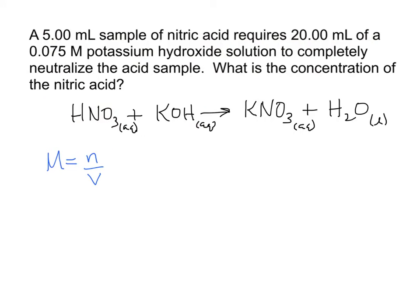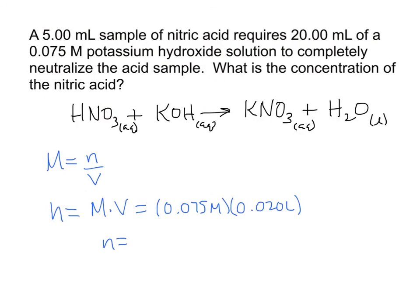Rearranging: moles = molarity × volume. The molarity of potassium hydroxide is 0.075 molar, and the volume is 20 milliliters, which converts to 0.020 liters. Multiplying gives us 0.0015 moles of KOH. Because of the one-to-one reacting ratio, we also have 0.0015 moles of HNO₃.